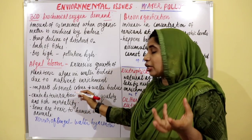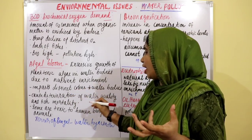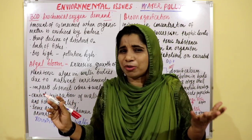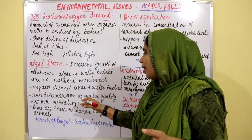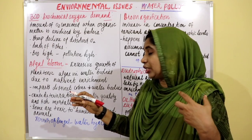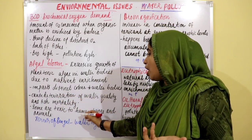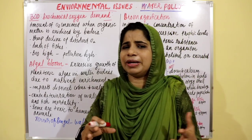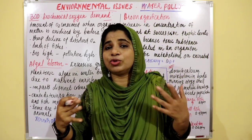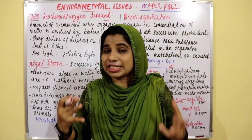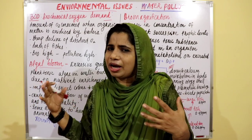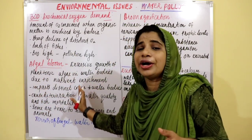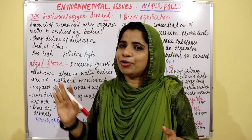Algal blooms cause deterioration of water quality and fish mortality. Some algal blooms are toxic to human beings and animals. You can use these three points for algal bloom.